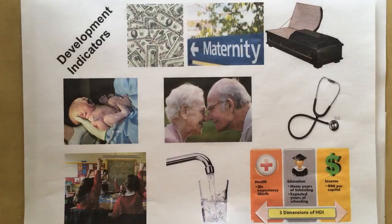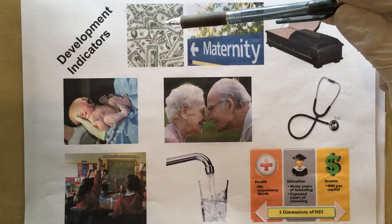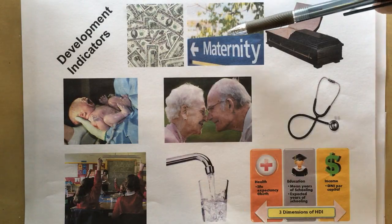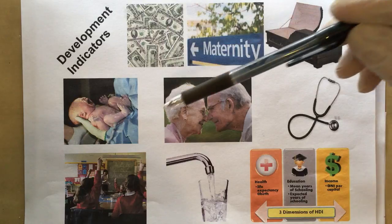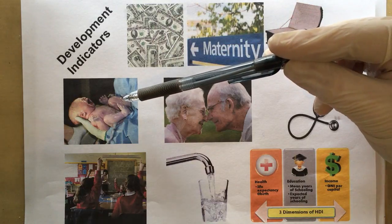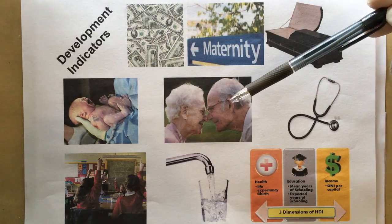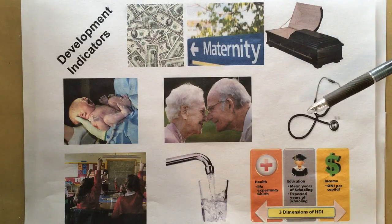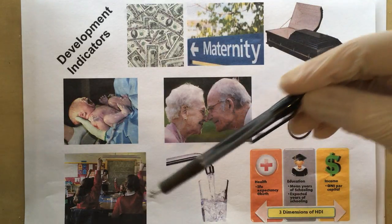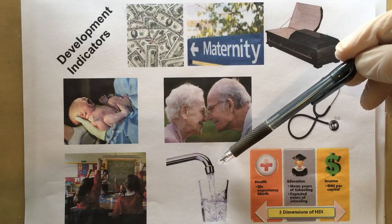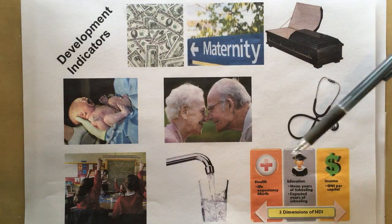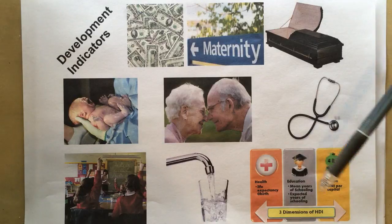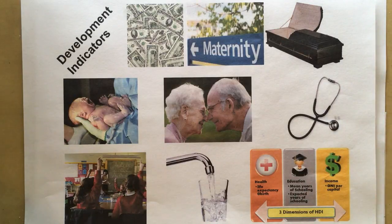Here are some development indicators with pictures that go with them. We can look at how much money a country has, the number of births, number of deaths, how well babies are looked after after birth, life expectancy, healthcare, education, access to water, and what are called composite indicators — we'll talk about those later.